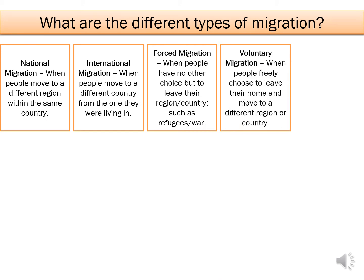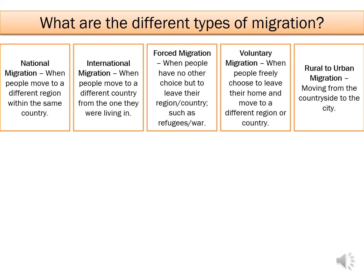You have voluntary migration when people choose to leave their home and move to a different region or country. It could be that you are moving for education, for jobs, or better opportunities of healthcare. And then finally, rural to urban migration is linked with voluntary migration but is a specific movement from the countryside to the city.